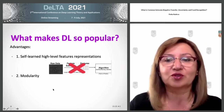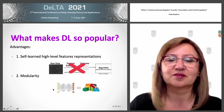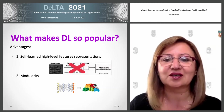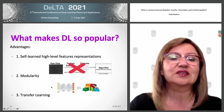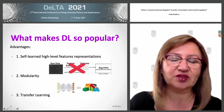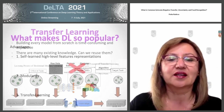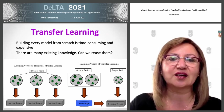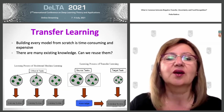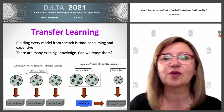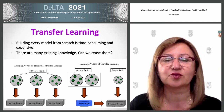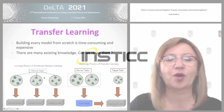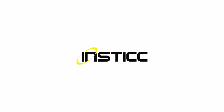The second advantage is the modularity of deep learning models. Today we can easily construct and adapt different architectures to solve different problems. The third very important aspect is transfer learning — the idea of how to build models that, instead of training from scratch, reuse existing knowledge acquired in different domains and tasks.